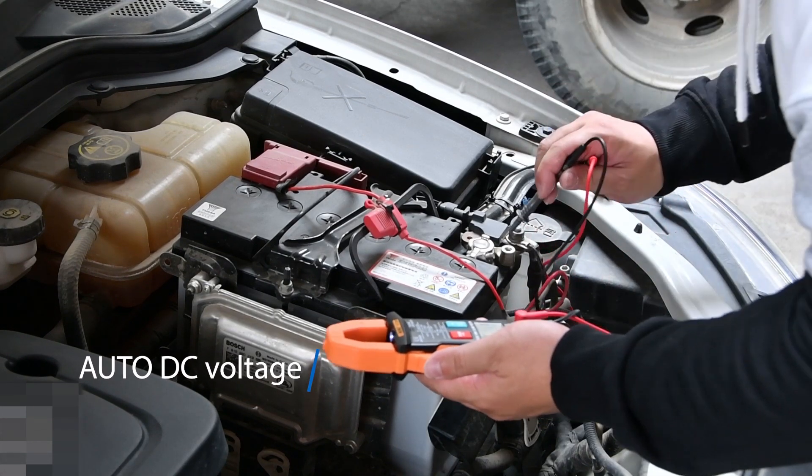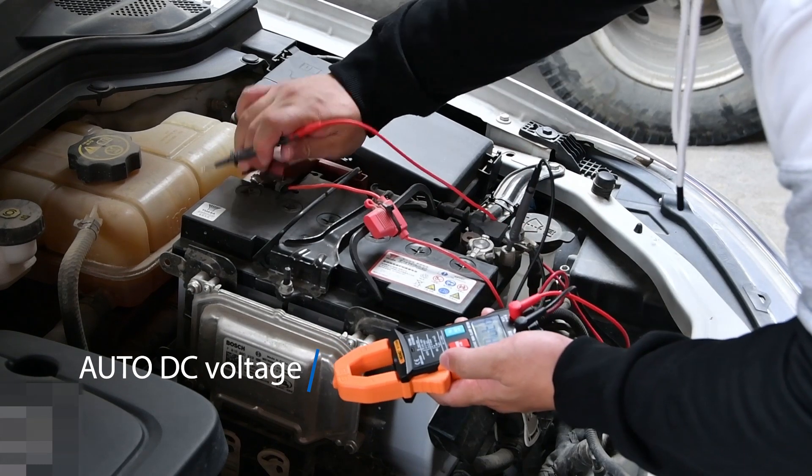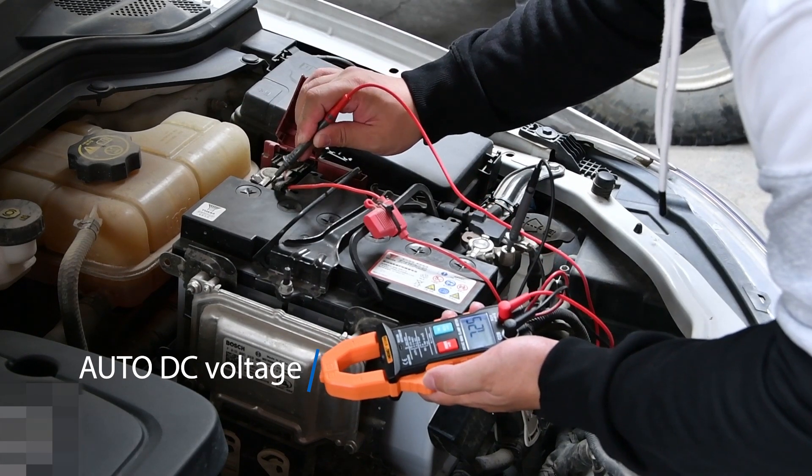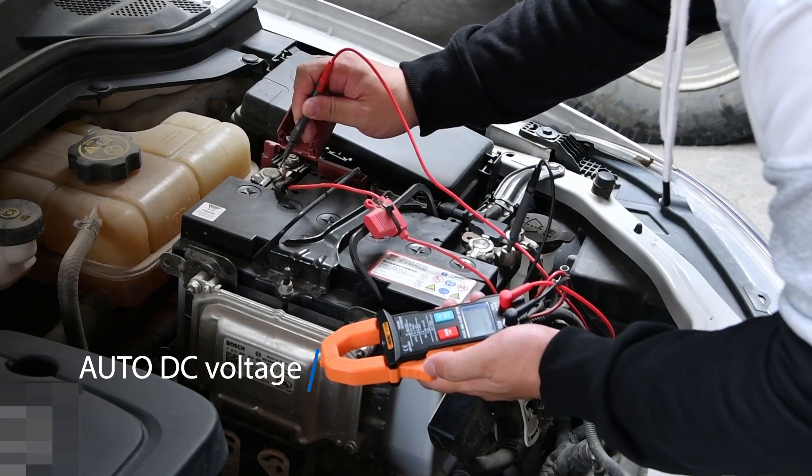Automatic recognition of DC voltage. 600V can directly measure the DC voltage of the car.